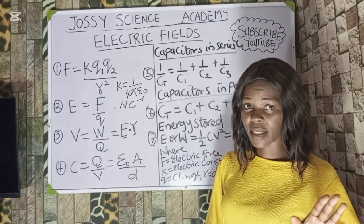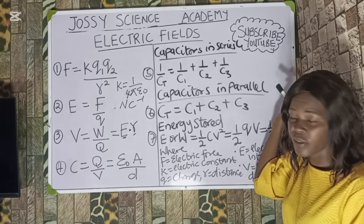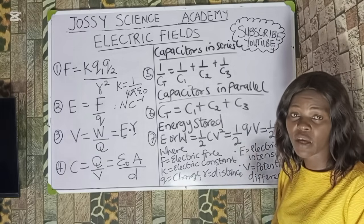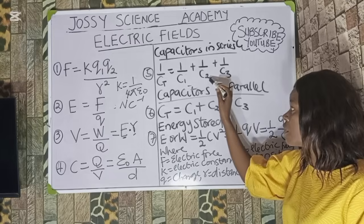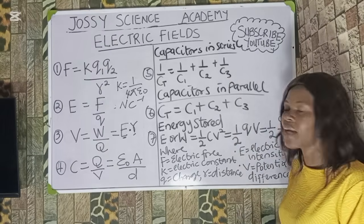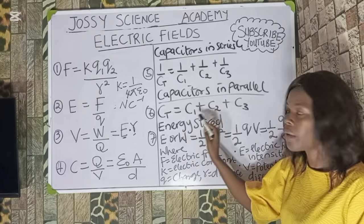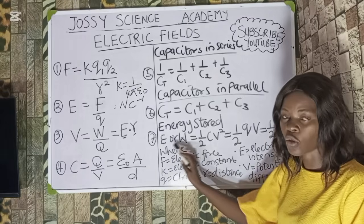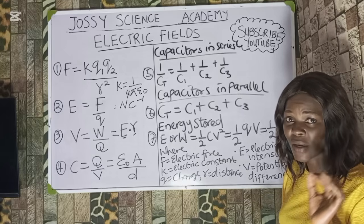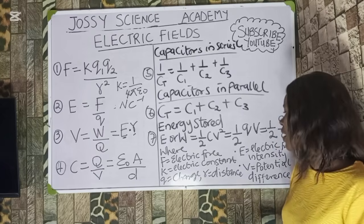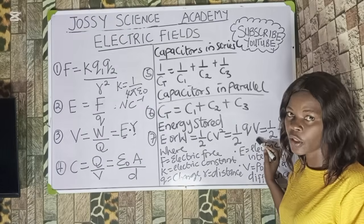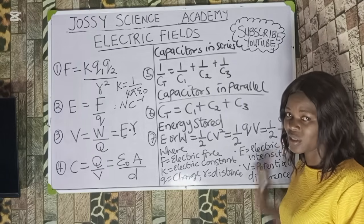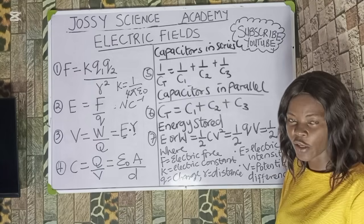For capacitors connected in series, the effective capacitance is: 1 over C_total equals 1 over C₁ plus 1 over C₂ plus 1 over C₃. When connected in parallel, C_total equals C₁ plus C₂ plus C₃. For the energy stored or work done in a capacitor, there are three formulas: W equals ½CV², or ½QV, or ½Q² over C. You pick whichever one matches the values you are given.